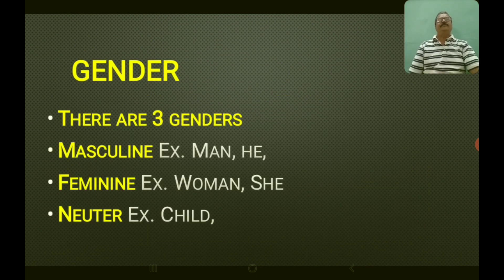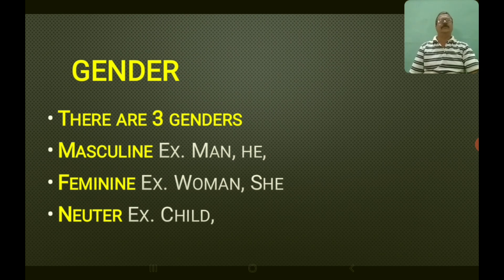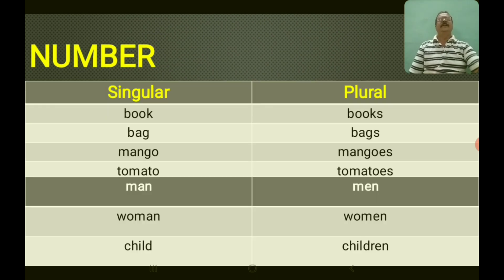Now let us move on to gender. When we speak about nouns, we must remember this. There are three genders: masculine gender — man, he; feminine gender — woman, she; and neutral gender — child, it.